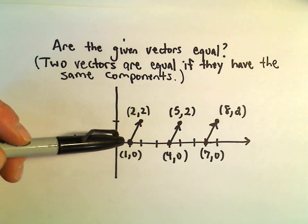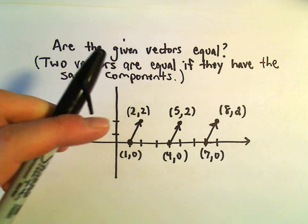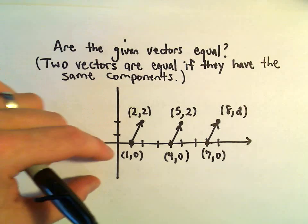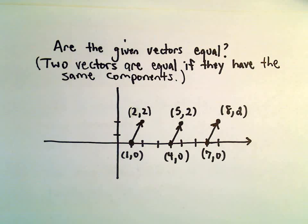So what this says is vectors can be considered exactly equal, independent of where they are in the plane, just so long as they have the same components.